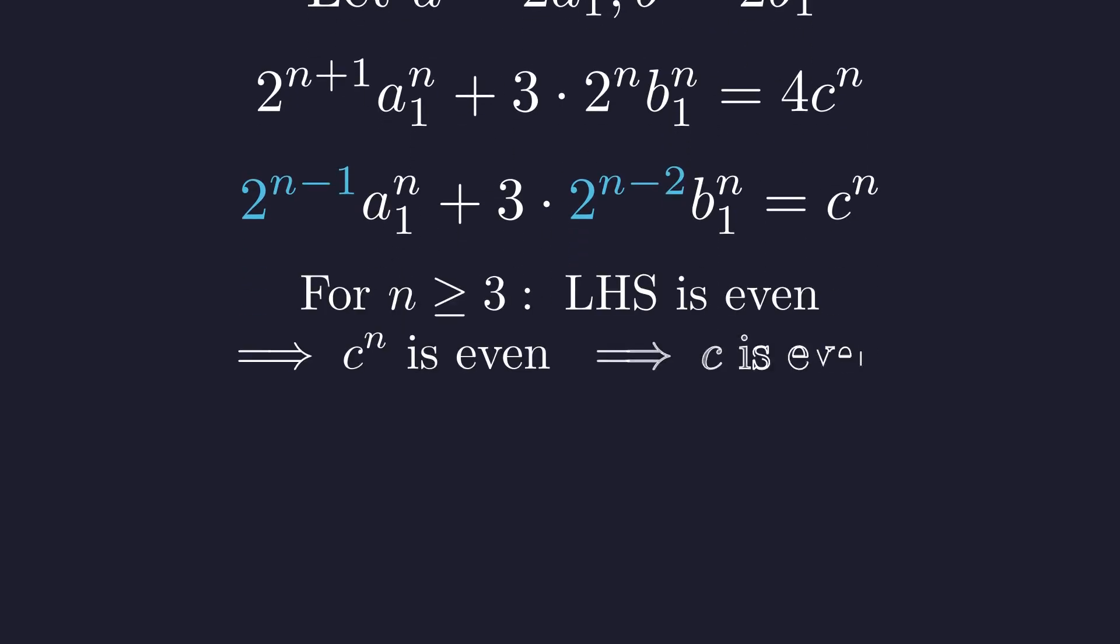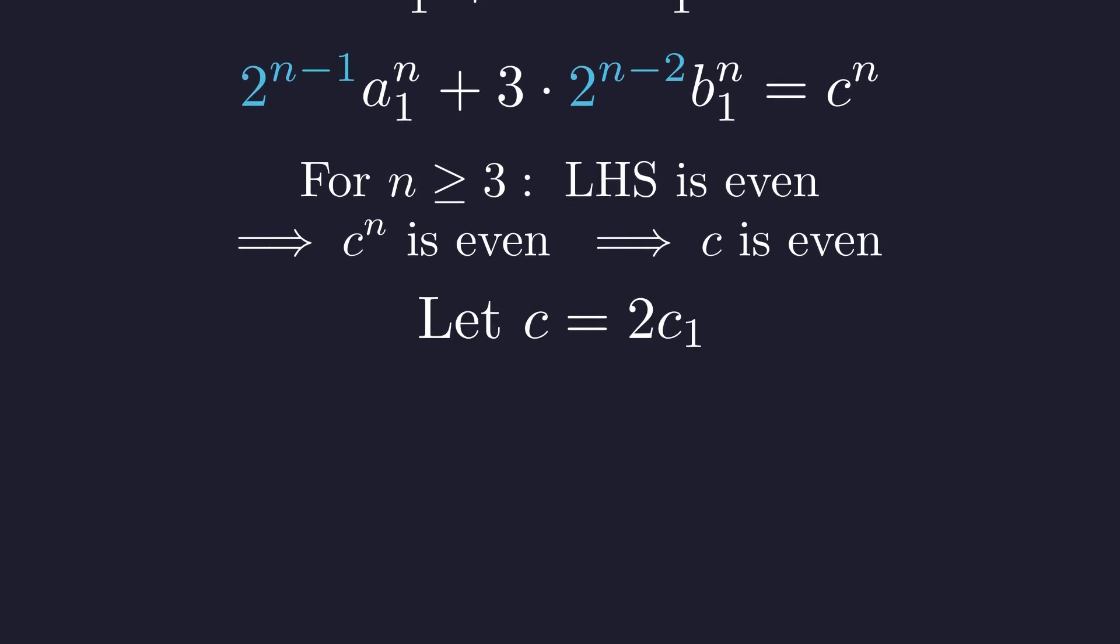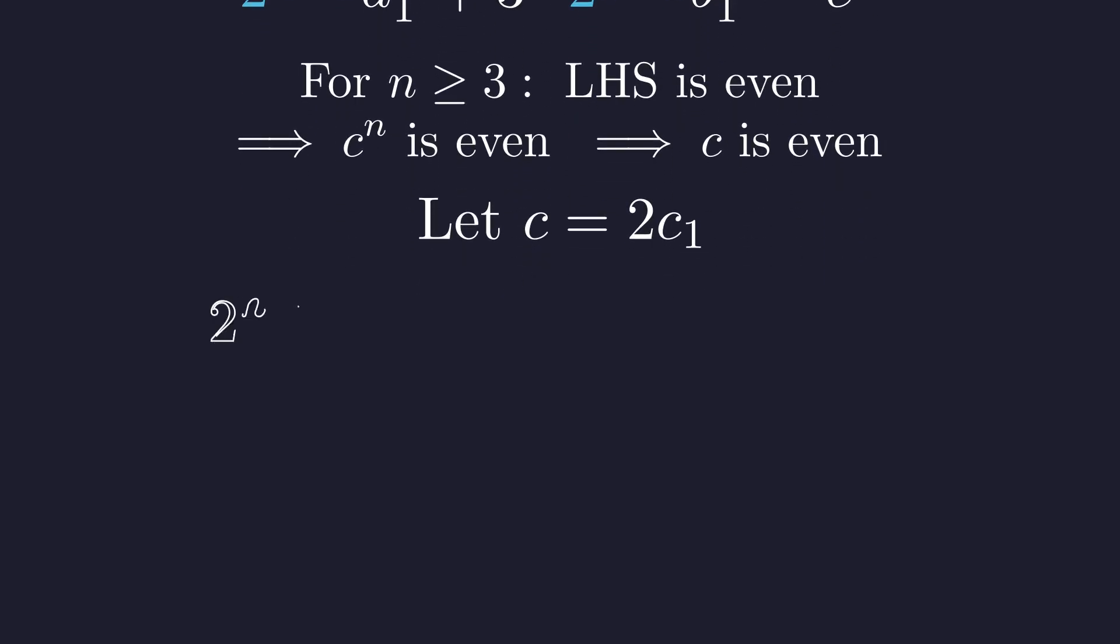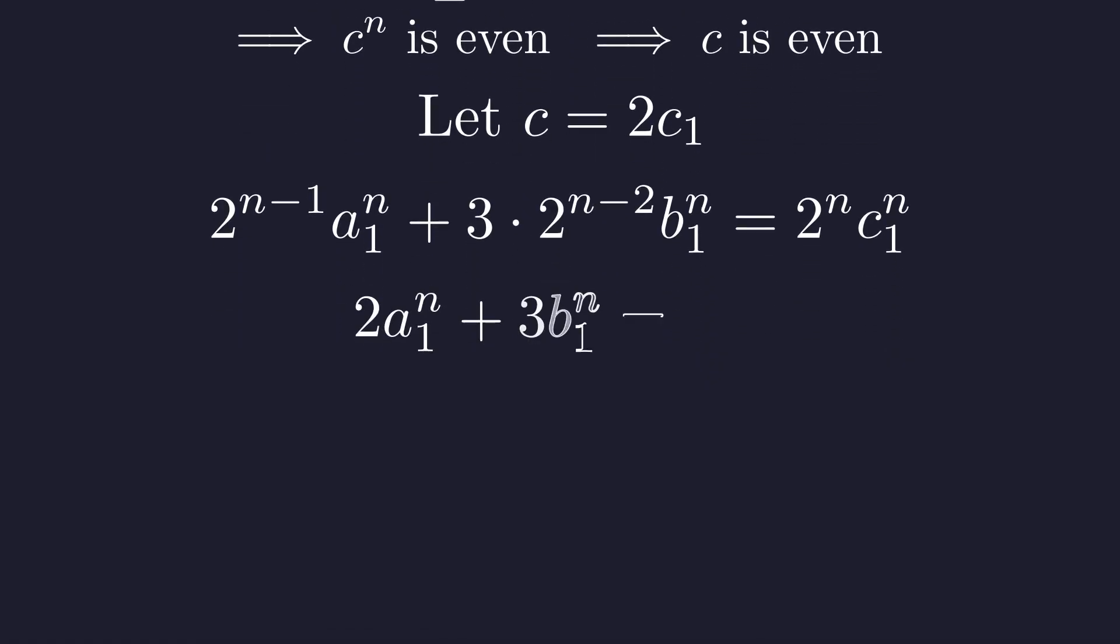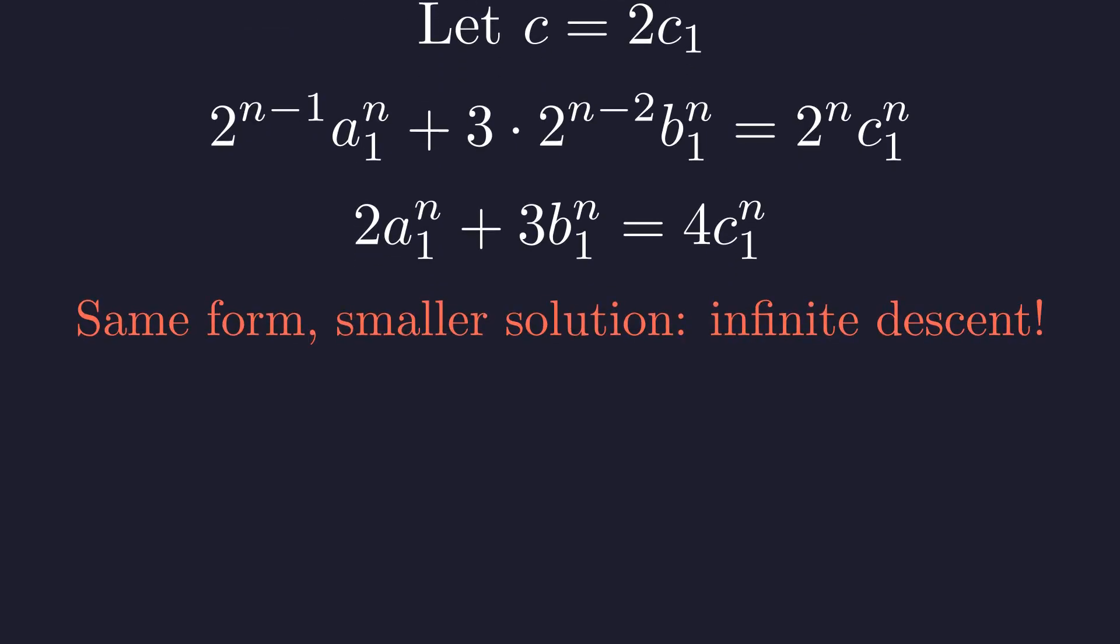For n at least three, the left hand side is definitely even, which forces c to be even. So let c equal two times c₁. Substituting this back into our equation, dividing through by two to the power n minus two gives us the same equation form with strictly smaller positive integers. Again, we have the same equation form with a strictly smaller solution, leading to infinite descent and a contradiction.